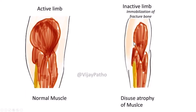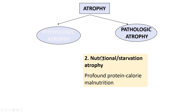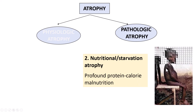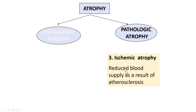This is a normal muscle illustration, and that's the illustration of the atrophied muscle because of disuse. The second example is nutritional or starvation atrophy — the most common example we can think of is profound protein-calorie malnutrition, where you can easily identify the severity of atrophy of the entire body. The third one is ischemic atrophy: because of atherosclerosis, there is narrowing of the blood vessels, leading to reduction of blood flow and ischemia — this is called ischemic atrophy, which is pathologic atrophy.